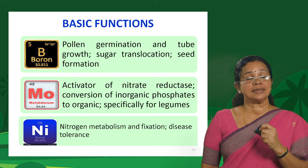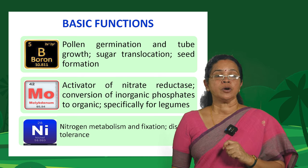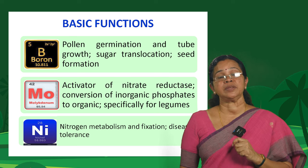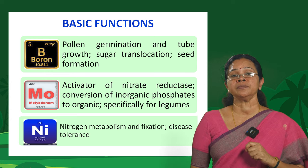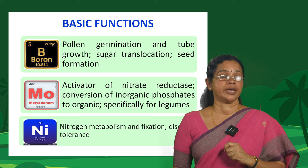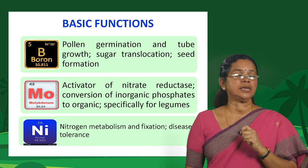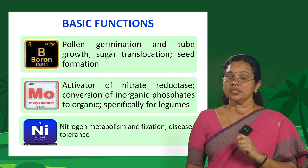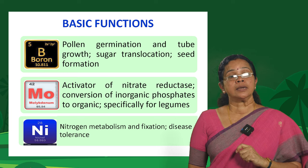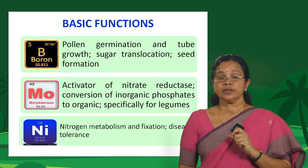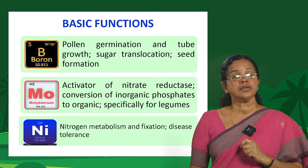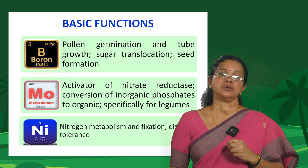The ultra-micronutrient molybdenum is considered the activator of nitrate reductase — the enzyme involved in nitrogen metabolism. It is involved in the conversion of inorganic phosphates to organic form, and is specifically required for nitrogen fixation by legumes. Nickel has a very specific role in nitrogen metabolism and fixation, and also confers disease tolerance to crops.